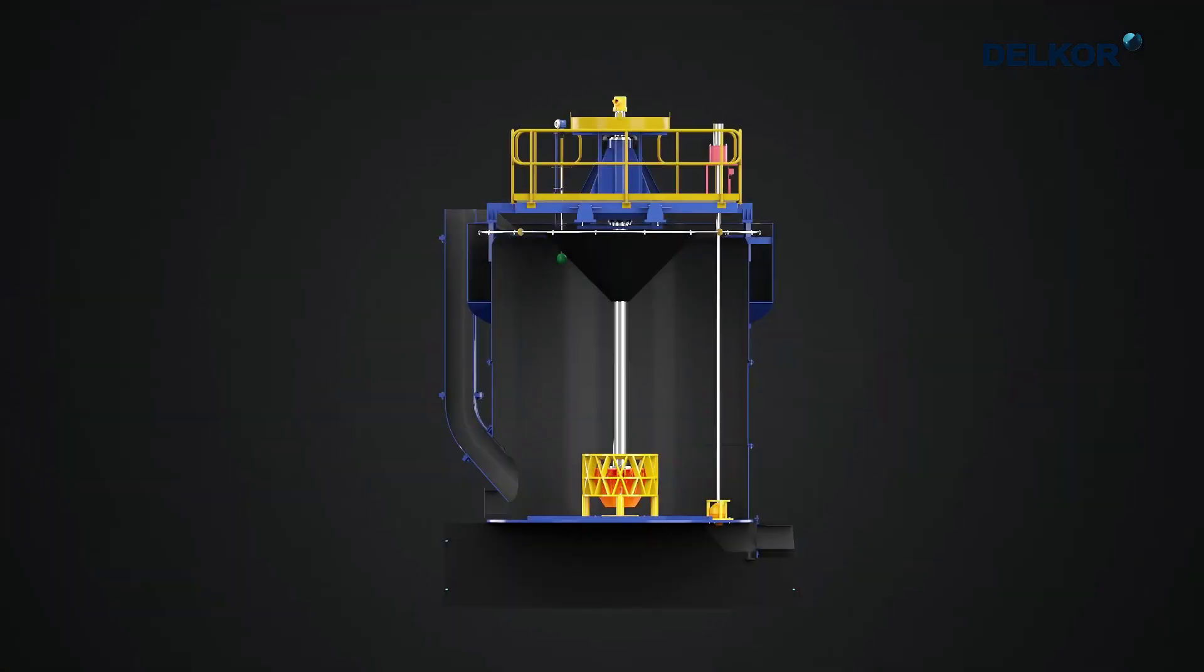Here is how it works. The slurry enters the flotation cell through the feed box. Then the air enters the flotation cell through the rotor shaft.